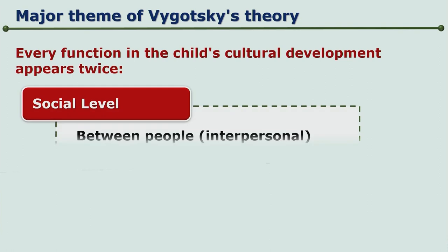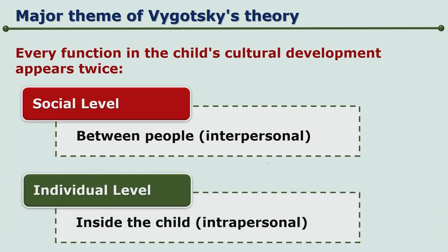The major theme of Vygotsky's Theory is that every function in the child's development, especially the cultural development, appears twice. First at the social level — between people — which we call interpersonal. And then it happens at the individual level within the child, that is intrapersonal.